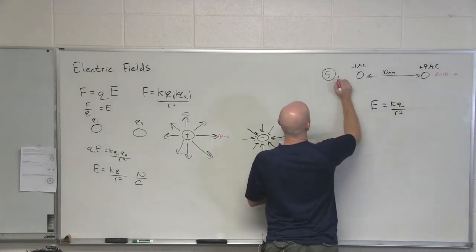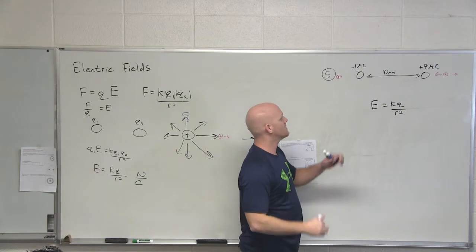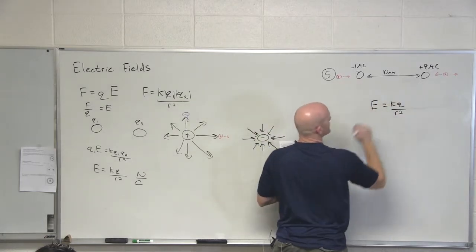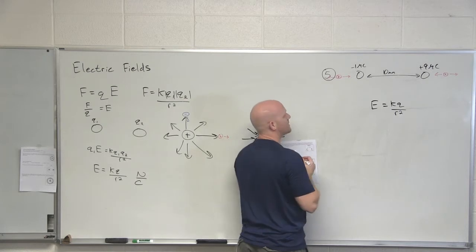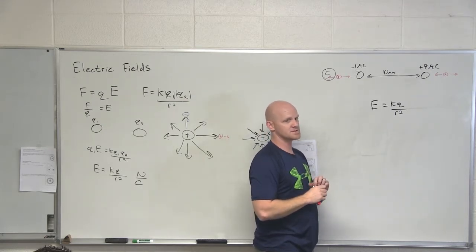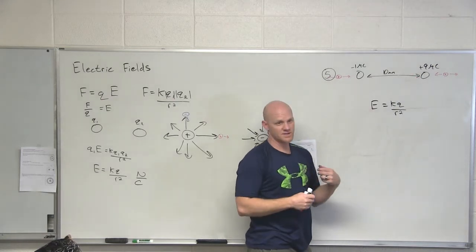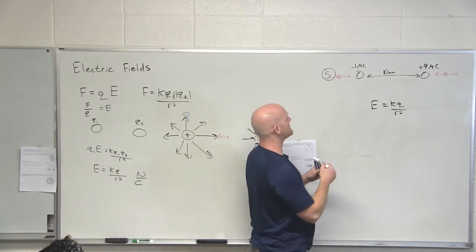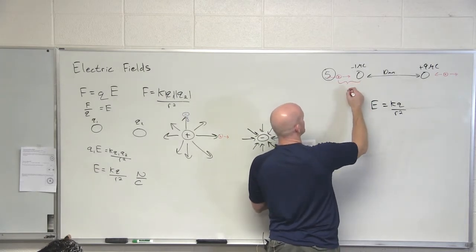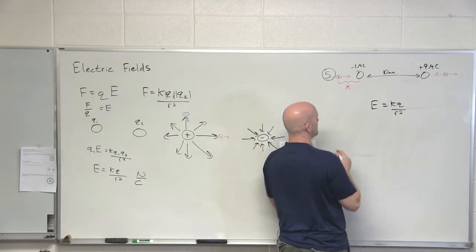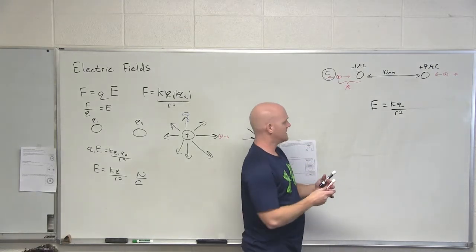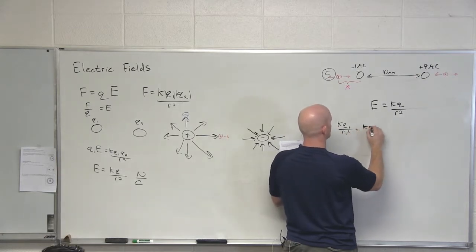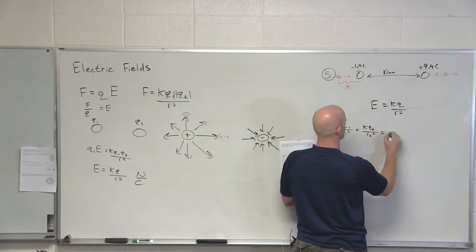So then we go to the other side — to the left of the negative one microcoulomb charge. The electric field due to the negative one microcoulomb charge points to the right, and due to the positive nine microcoulomb charge points to the left. Based on charge considerations, the nine microcoulomb dominates, but based on distance of separation, the negative one is closer. At some point they're going to balance. I'll call the distance to the left X, so the equation is: KQ1 over X squared plus KQ2 over (X + 0.01)² equals zero.